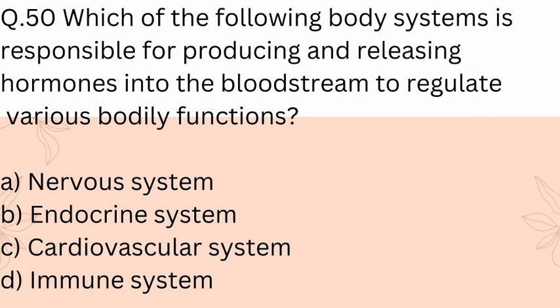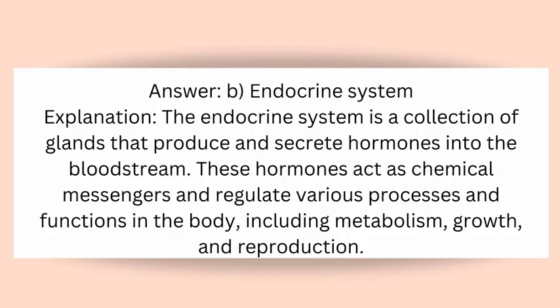Question 50: Which of the following body systems is responsible for producing and releasing hormones into the bloodstream to regulate various bodily functions? A) Nervous system, B) Endocrine system, C) Cardiovascular system, D) Immune system. Answer: B) Endocrine system. Explanation: The endocrine system is a collection of glands that produce and secrete hormones into the bloodstream. These hormones act as chemical messengers and regulate various processes including metabolism, growth, and reproduction.